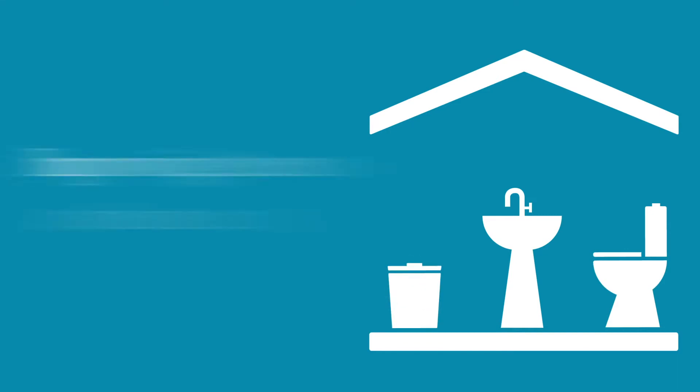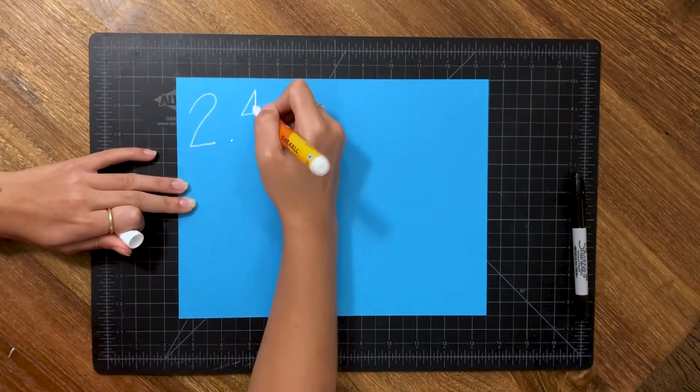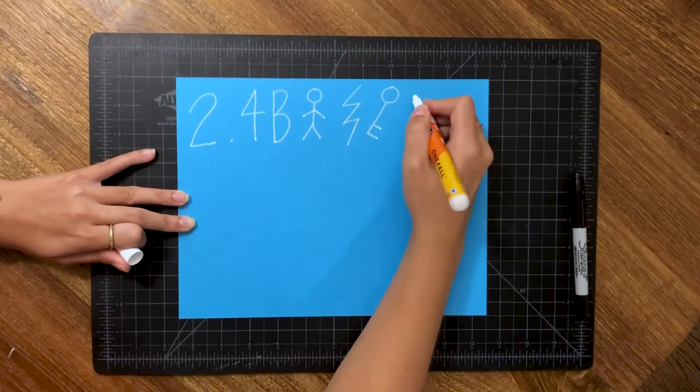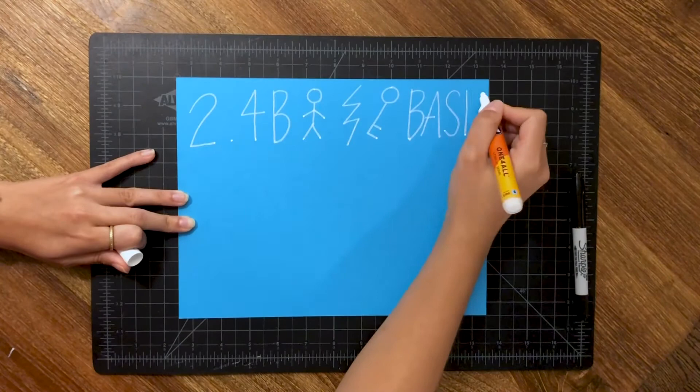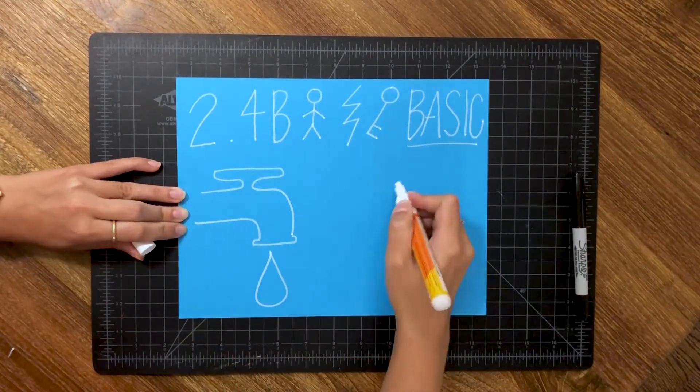SDG 6 is also about improving access to and systems of sanitation, which is so important because 2.4 billion people lack access to basic sanitation services. These are just a few of the big issues SDG 6 aims to fix.